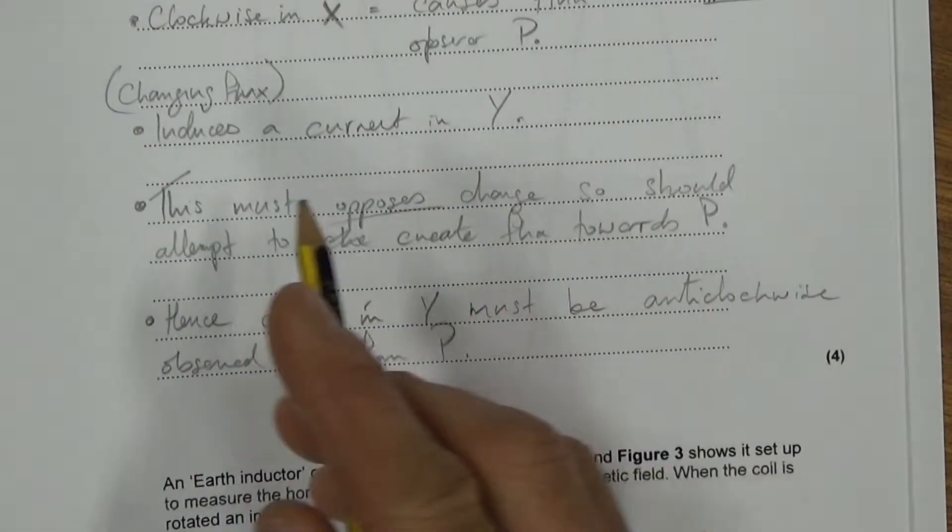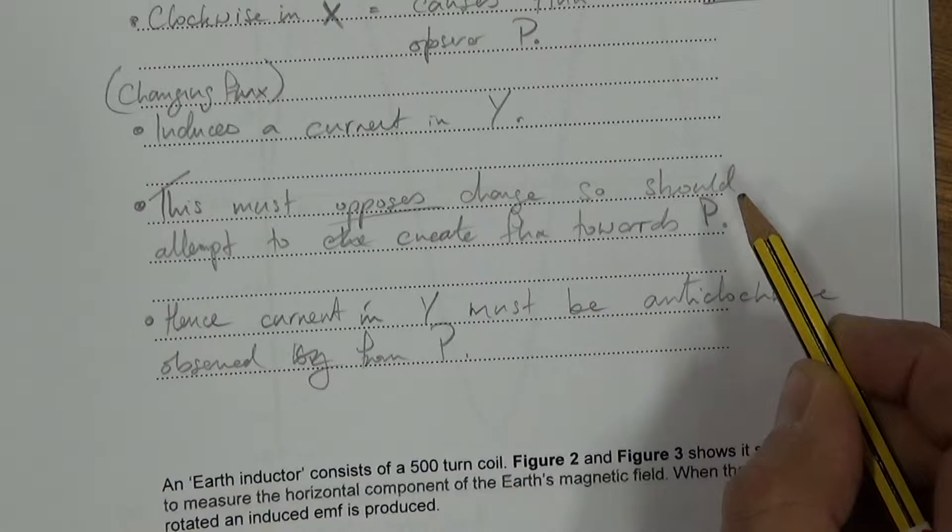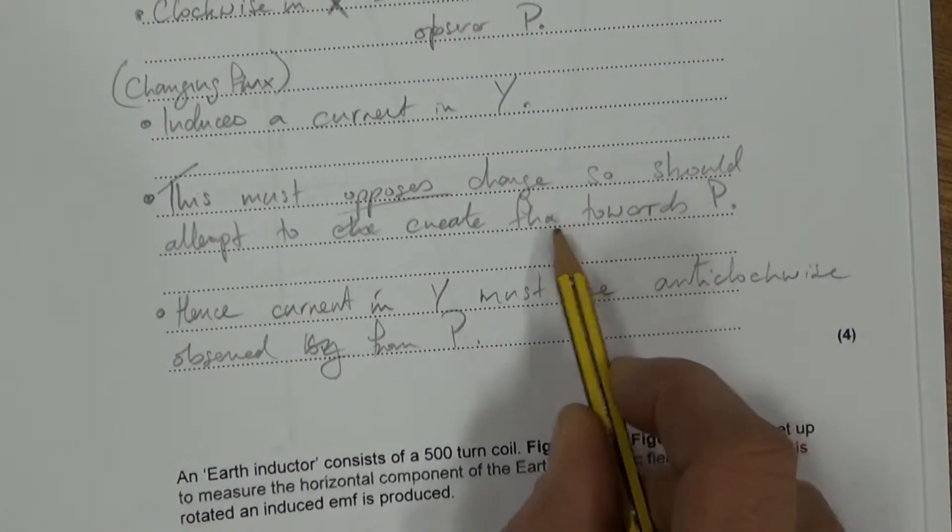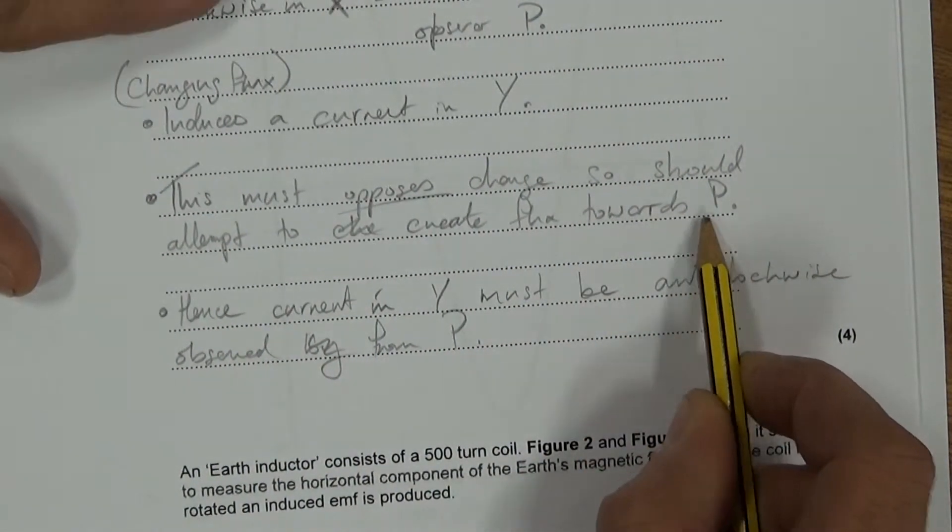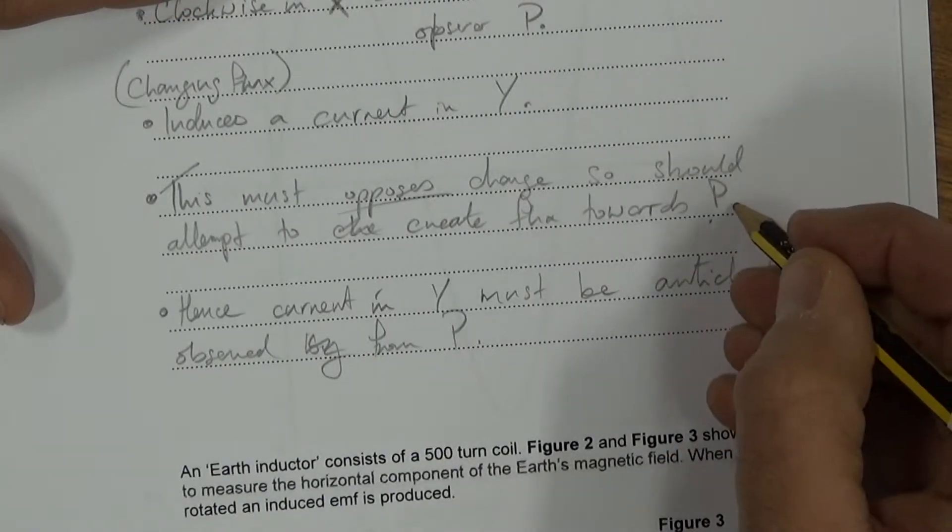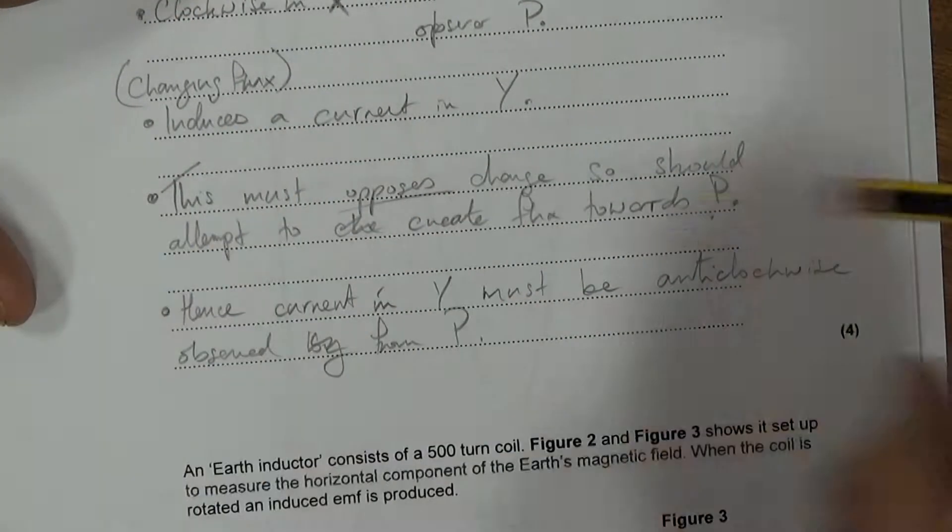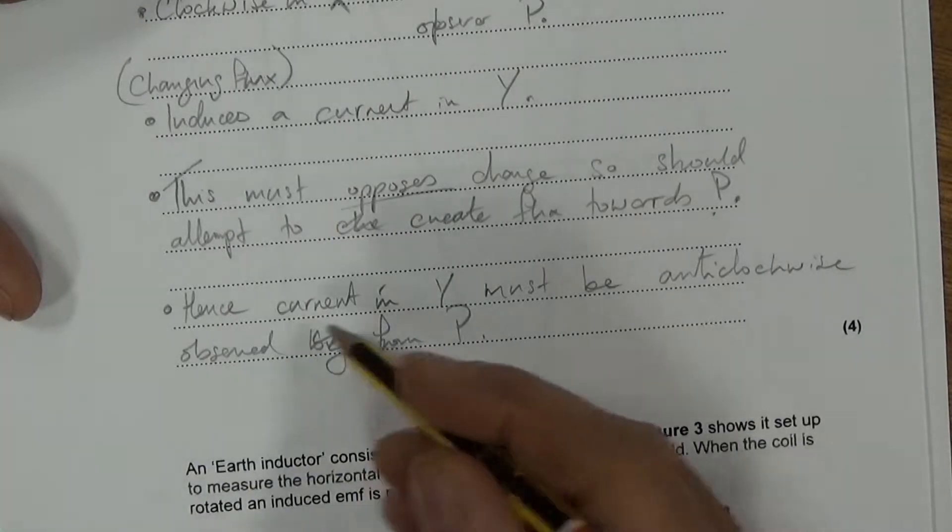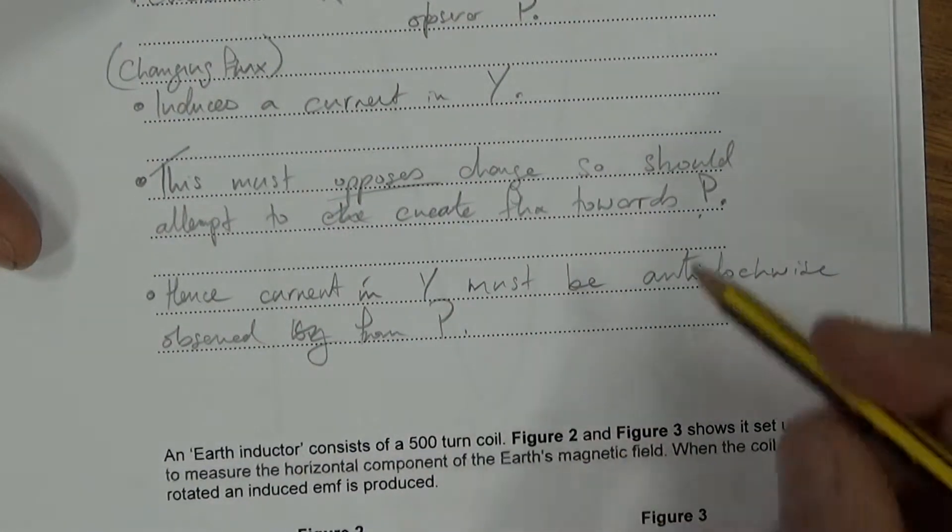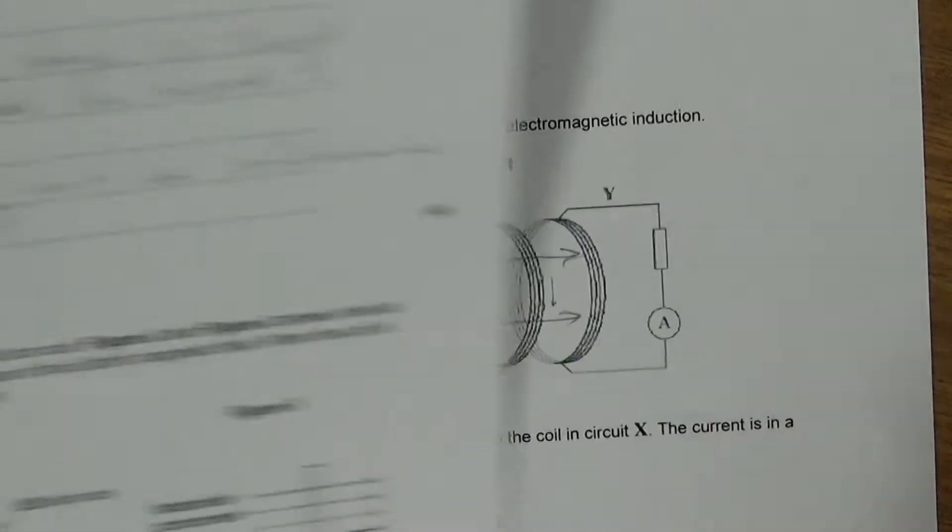This current in Y will oppose the change that's causing it. Therefore, it will attempt to create a flux towards P. If it's attempting to create flux towards P because it's opposing the flux that's going away from P, what it's going to do is create a current in Y that will be anticlockwise if observed from P.